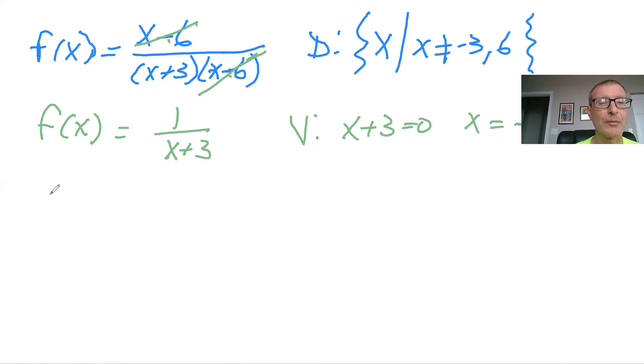So Y intercept. So that's when X equals 0. So you plug that in, 1 over 0 plus 3. So that Y intercept in this case would be 1 third.